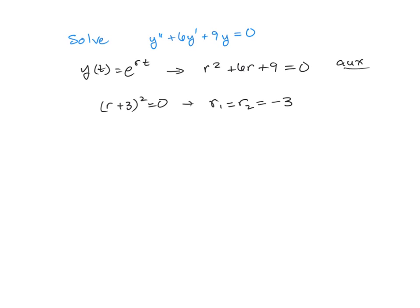So we can't use e to the negative 3t for both because that's just the same function, and it's clearly not linearly independent. So what we do is we put a t in front of the second term to break that linear dependence.